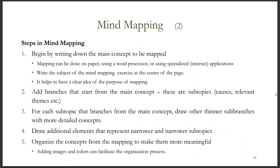You can apply mind mapping following these steps. One, begin by writing down the main concepts to be mapped — mapping can be done on paper, using a word processor, or using specialized software. Two, add branches that start from the main concept; these are related sub-topics. Three, for each sub-topic that branches from the main concept, draw outer thinner sub-branches with more detailed concepts. Four, draw additional elements that represent narrower and narrower sub-topics. Five, organize the concepts from the mapping to make them meaningful.